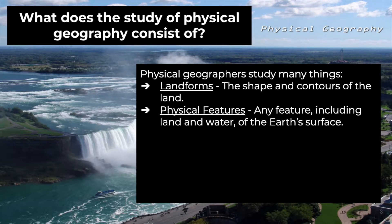Physical features is different from landforms because it can include any feature — including land and water — of the earth's surface. So to know the difference: landforms only have to do with the land, whereas physical features can include both land and water.